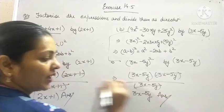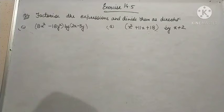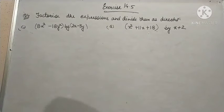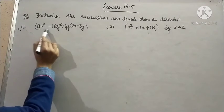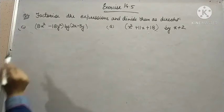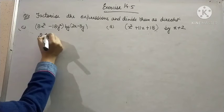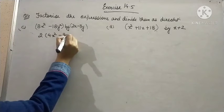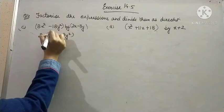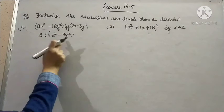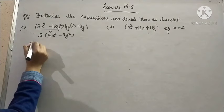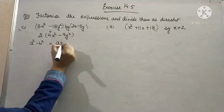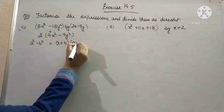This is our required answer. In part c, it is given 8x square minus 18y square. So, first of all, we will check what is common in both. 2 is common. What will be left? 4x square minus 9y square. We are solving this expression only. Now, here which identity can be used? a square minus b square equals a plus b into a minus b.